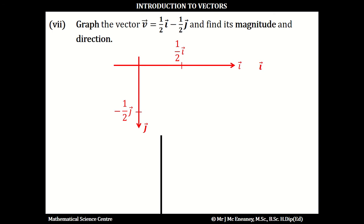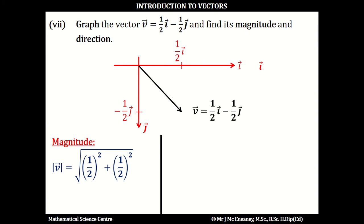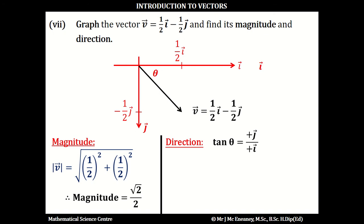In part 7, the vector v is a half i minus a half j. If we want to find the magnitude and direction, we graph the vector by going across to plus a half and then down to minus a half j. Using Pythagoras' theorem, the magnitude of v is the square root of a half squared plus a half squared. This works out as the square root of a quarter plus a quarter, which is the square root of a half, and this works out as root 2 over 2. To get the angle theta, the tan of theta is the positive j over the positive i, so the tan of theta will be a half over a half, which is 1. This means theta is inverse tan of 1, which is 45 degrees. A positive i means east, a negative j means south, so the direction is southeast.